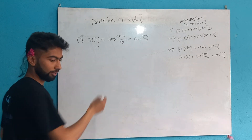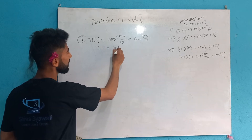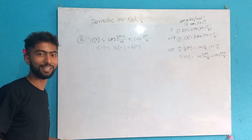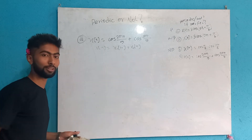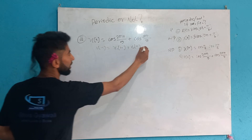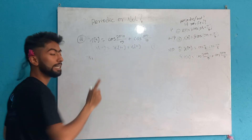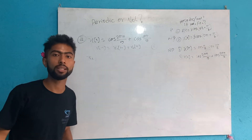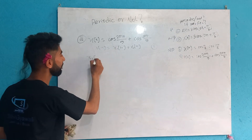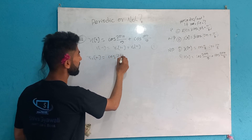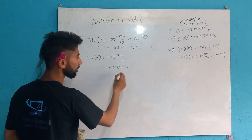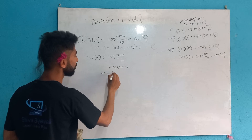This signal is x1[n] + x2[n]. For x1[n] = cos(2πn/5), compare with the standard form A·cos(ω₀n + θ). We identify ω₀ = 2π/5. Therefore f₁ = ω₀/(2π) = 1/5. Since 1/5 is a rational number (integer over integer), x1[n] is periodic with period 5.